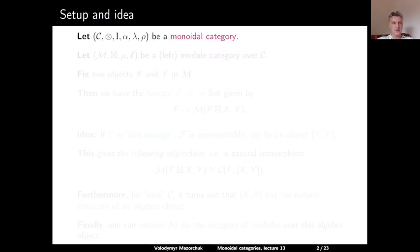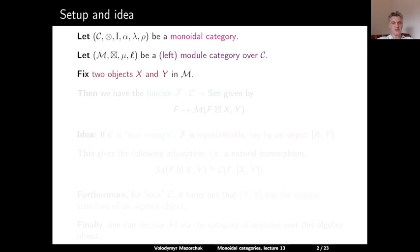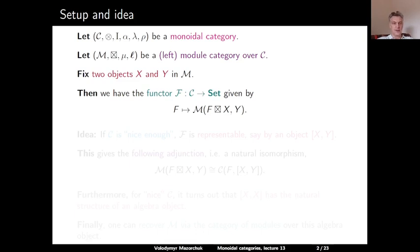Let C be a monoidal category and let M be a left module category over C. Let us fix two objects X and Y in M. Then we have the functor F from C to sets, given as follows: we take an object F in C and we map it to the morphism set in M from the object F acted upon X to the object Y.